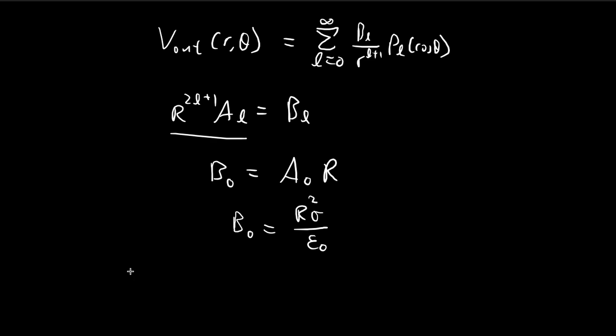And so now we can write out the expression for the potential outside of the sphere. So b_0 divided by r^0 plus 1, so r, and p_0 cosine theta. Now this is just 1, so we can just ignore it. So we get this expression here.